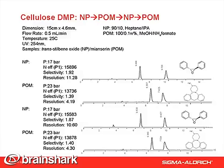This slide shows the reproducibility test between normal phase and polar organic phase, looking at values of efficiency, selectivity, and resolution. As you can see, they are very similar before and after. It requires only 20 to 30 column volumes of IPA washing and subsequent mobile phase conditioning between changes.